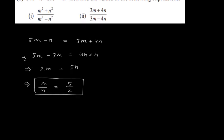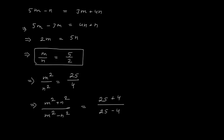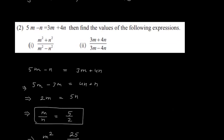So m/n = 5/2. Now we need to find (m² + n²) / (m² − n²). We find m²/n² = 25/4. Then applying componendo-dividendo: (m² + n²) / (m² − n²) = (25 + 4) / (25 − 4) = 29 / 21.